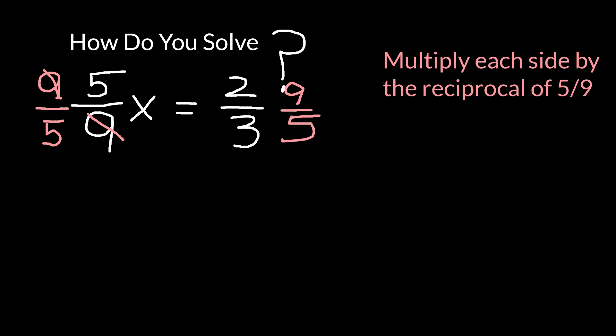On the right, I can simplify between the nine and the three. Three goes into nine three times, which makes that a one. And that leaves me with two times three. Two times three is equal to six. Six and one times five is going to be five.